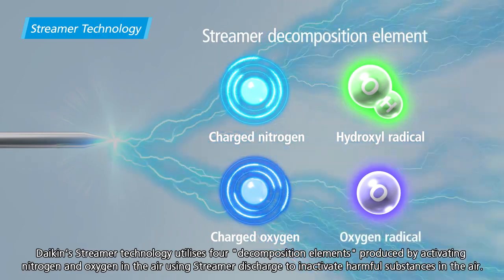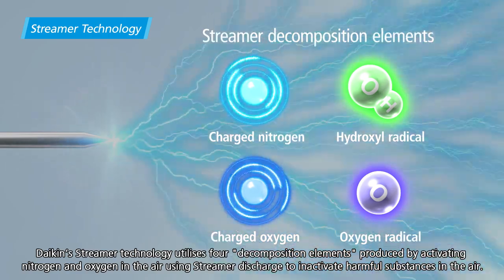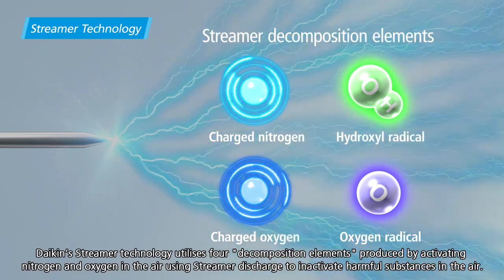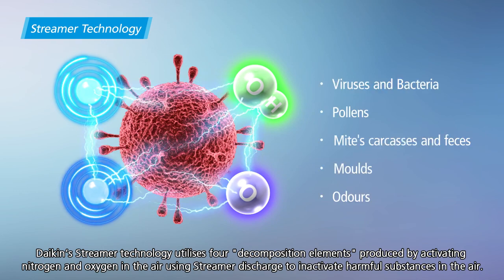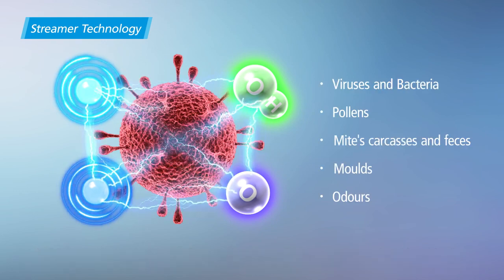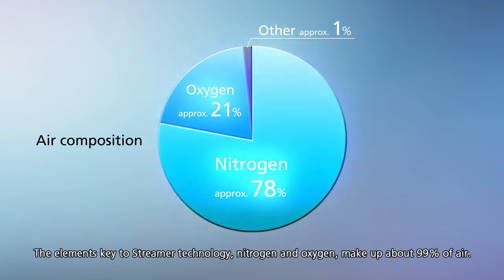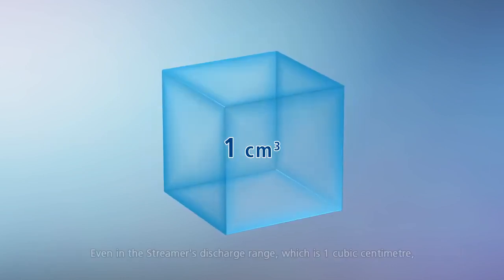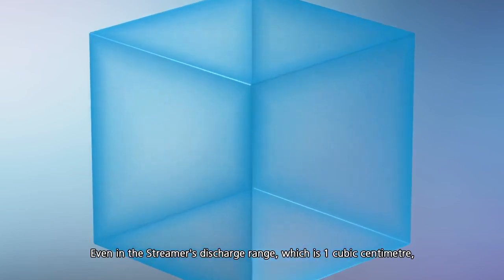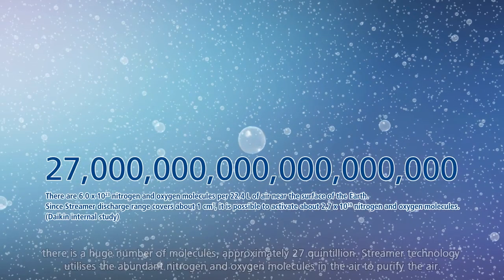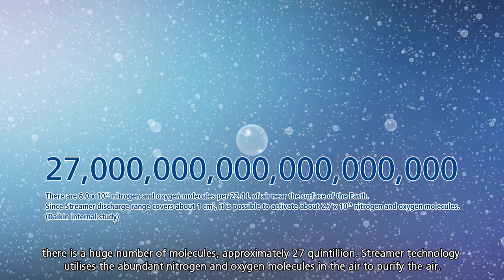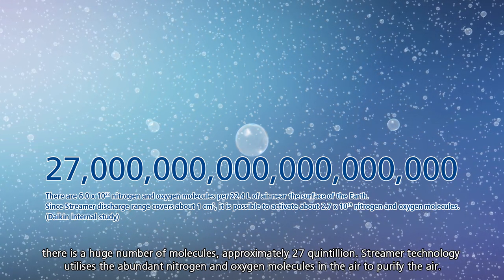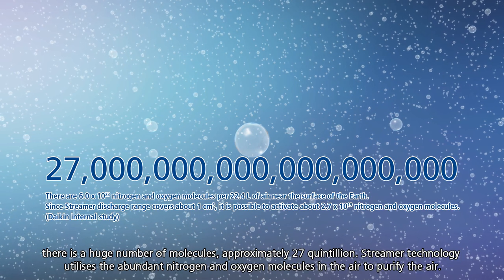Daikin's streamer technology utilizes four decomposition elements produced by activating nitrogen and oxygen in the air using streamer discharge to inactivate harmful substances in the air. The elements key to streamer technology, nitrogen and oxygen, make up about 99% of air. Even in the streamer's discharge range of one cubic centimeter, there is a huge number of molecules — approximately 27 quintillion. Streamer technology utilizes these abundant nitrogen and oxygen molecules in the air to purify the air.